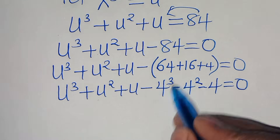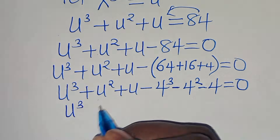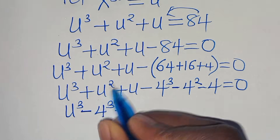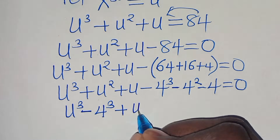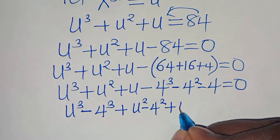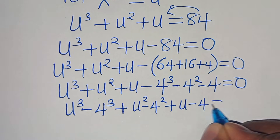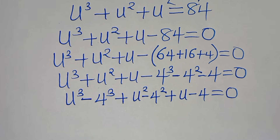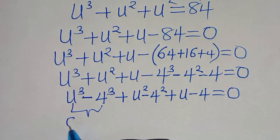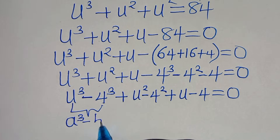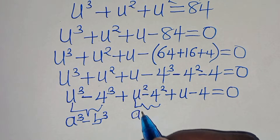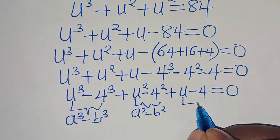We now have u cubed minus 4 cubed, plus u squared minus 4 squared, plus u minus 4, equal to 0. We can identify three parts here: the first part is the difference of two cubes, expressed as a cubed minus b cubed; the second part is the difference of two squares, expressed as a squared minus b squared; and the third part is u minus 4.